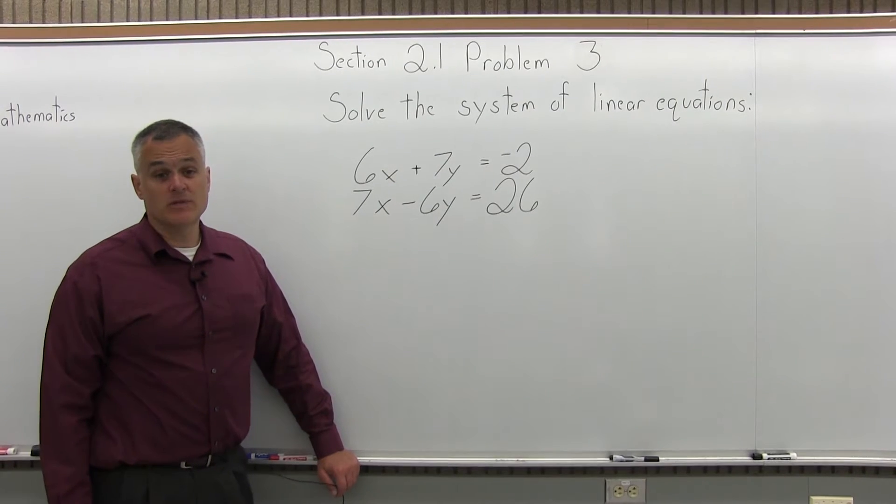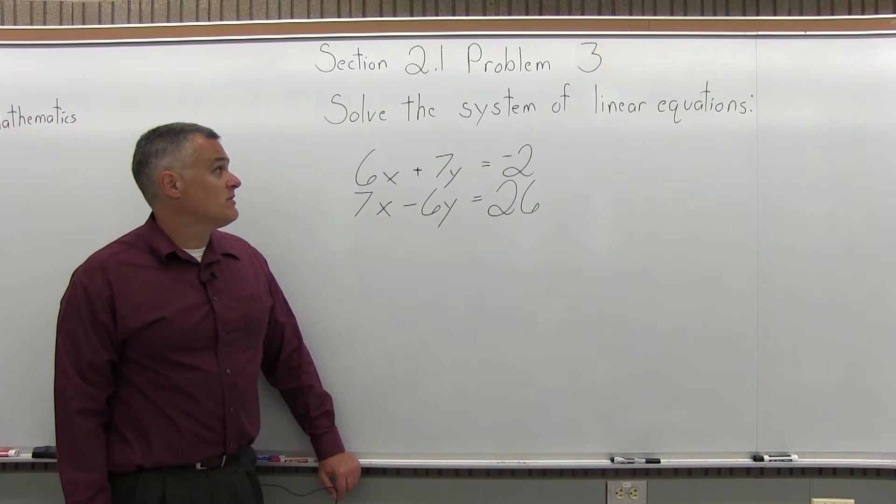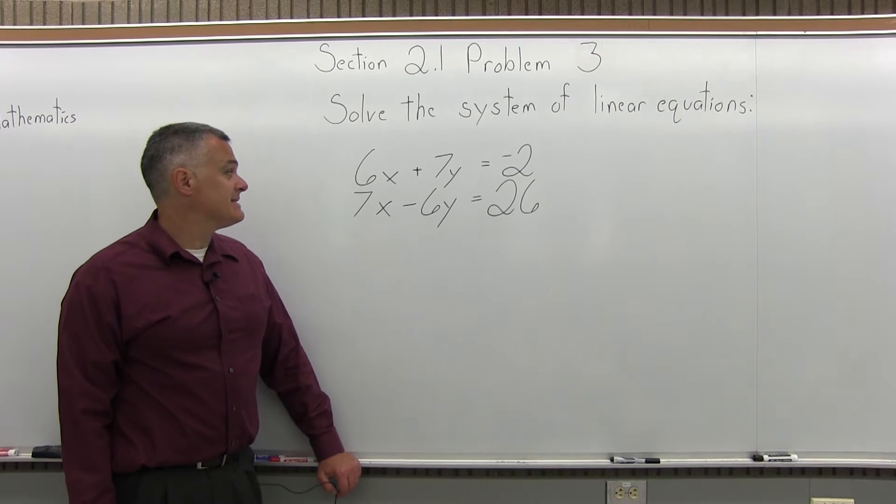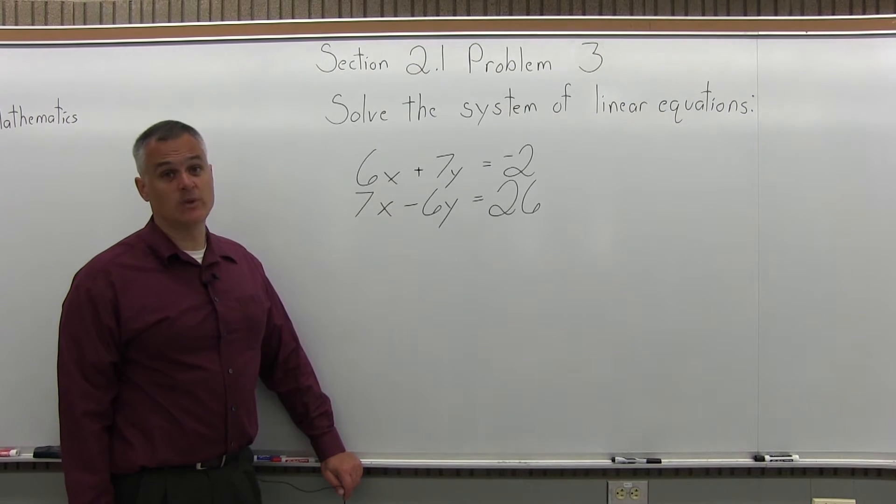This is Problem 3 from Section 2.1. Solve the system of linear equations: 6x plus 7y equals negative 2, and 7x minus 6y equals 26.